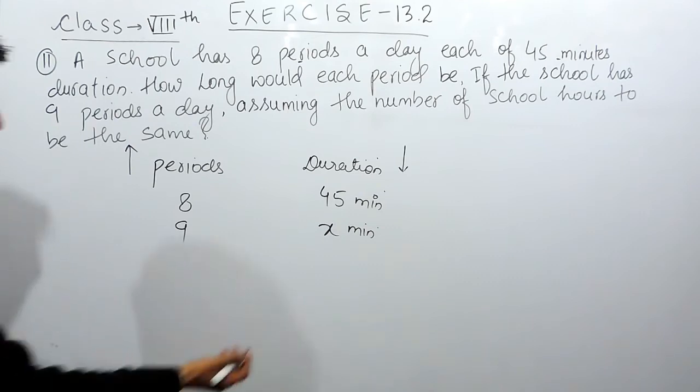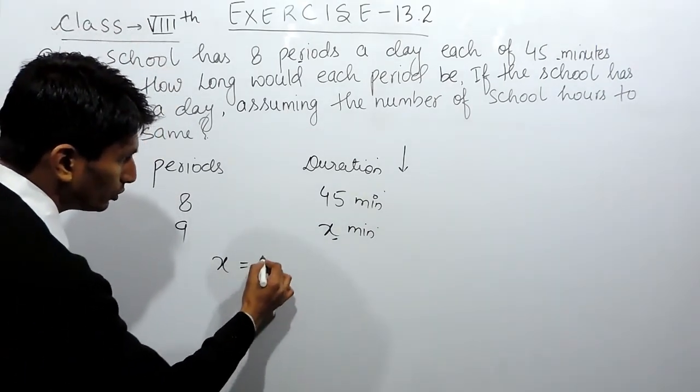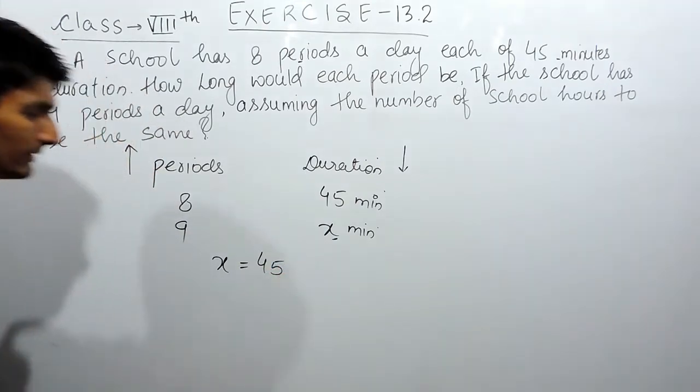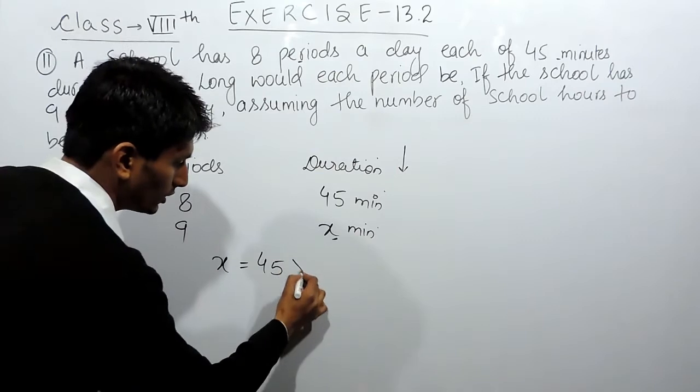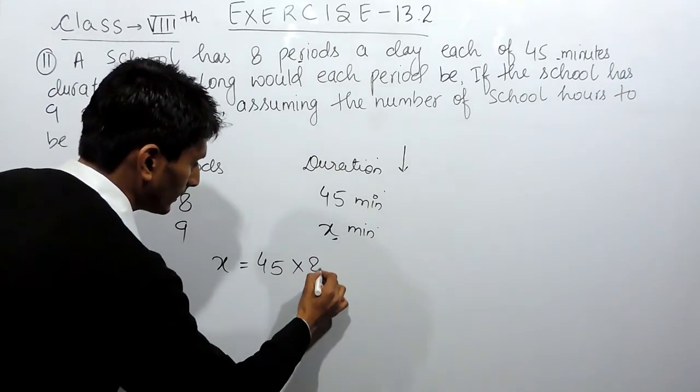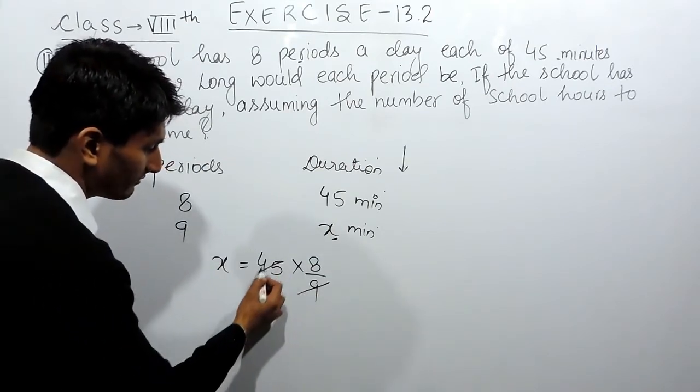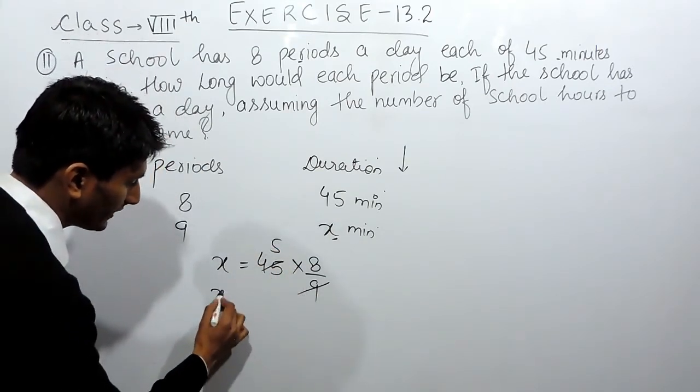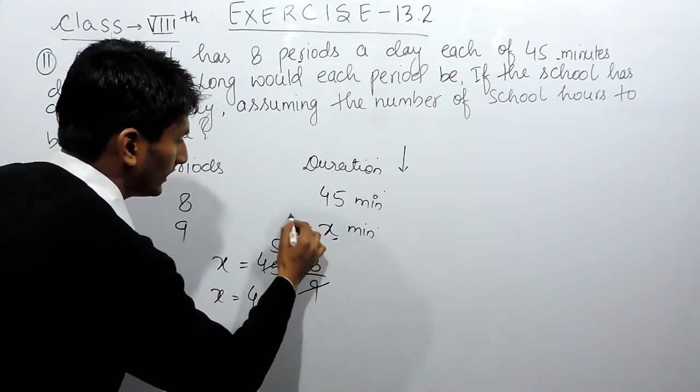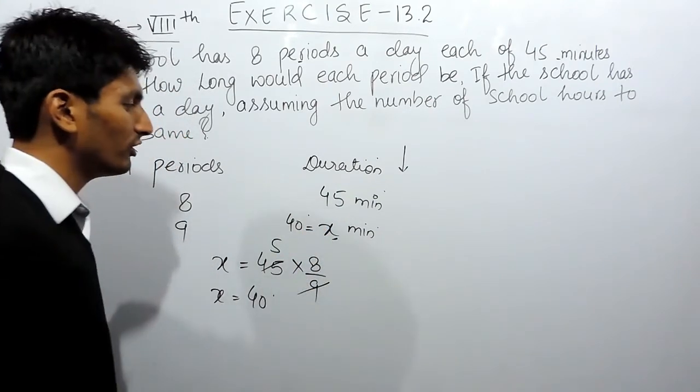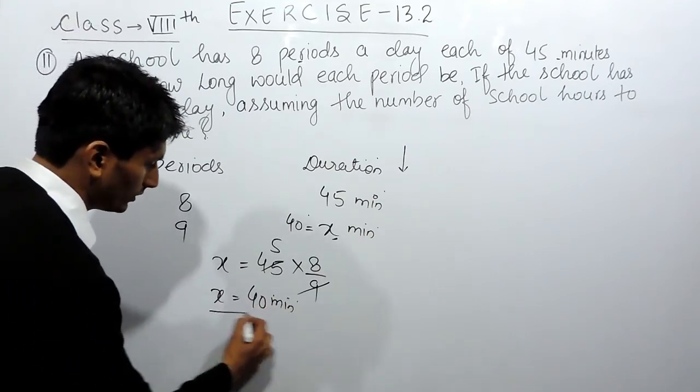You have to find this value. This can be written here equals to the value above. Because this is inverse proportion, we have to multiply by 8/9. This can be cancelled 5 times, so the value of x here will be 40 minutes. So each period will be of 40 minutes.